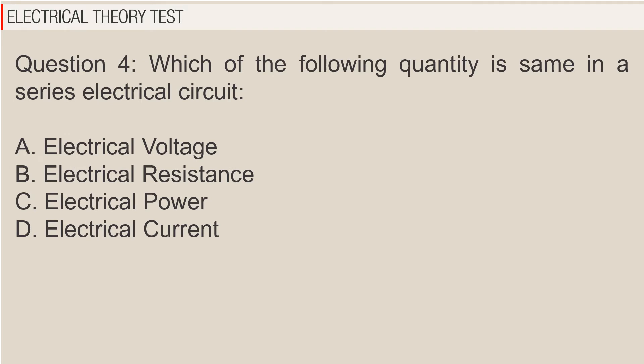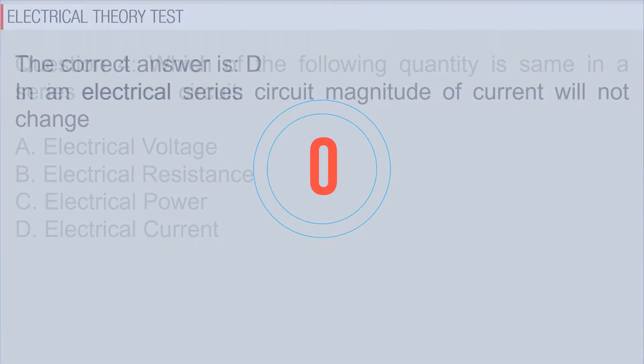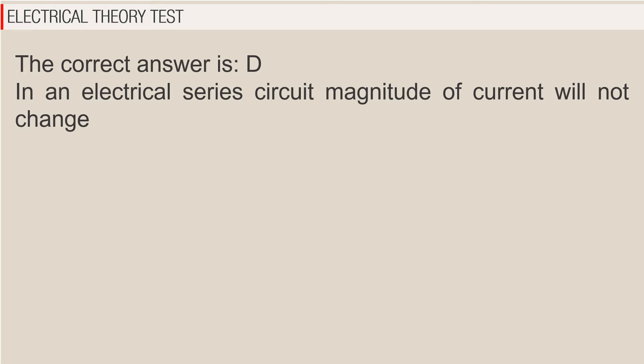Question 4: Which of the following quantity is same in a series electrical circuit? A. electrical voltage, B. electrical resistance, C. electrical power, D. electrical current. The correct answer is D. In an electrical series circuit, magnitude of current will not change.